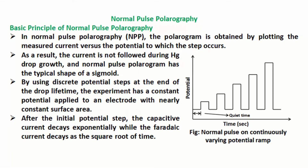In normal pulse polarography (NPP), the polarogram is obtained by plotting the measured current versus the potential to which the step occurs. As a result, the current is not followed during mercury drop growth, and the normal pulse polarogram has the typical shape of a sigmoid. By using discrete potential steps at the end of the drop lifetime, the experiment has a constant potential applied to an electrode with nearly constant surface area. After the initial potential step, the capacitive current decays exponentially while the faradaic current decays as the square root of time.